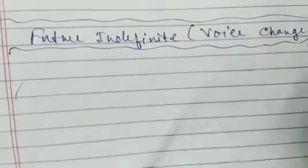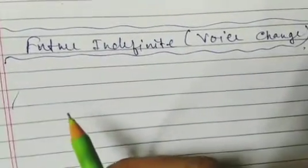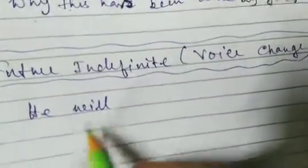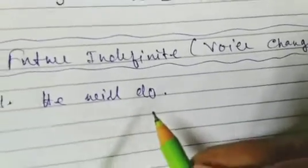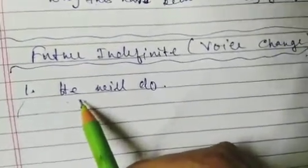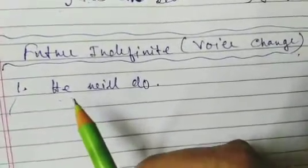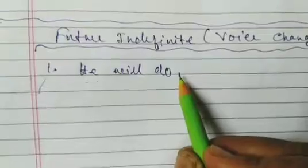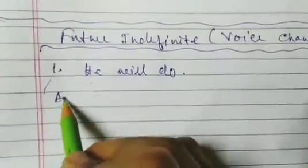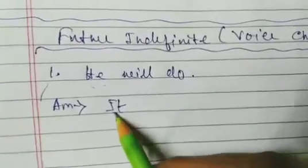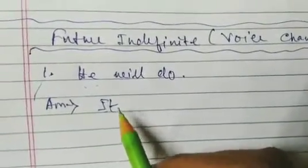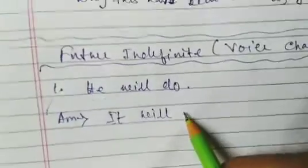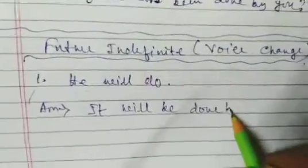This is future indefinite tense. Let's take an example. He will do. So how will we change this? There is no object, so we have to bring an object. We bring 'it' as the new object. So the answer will be: it will be done by him.